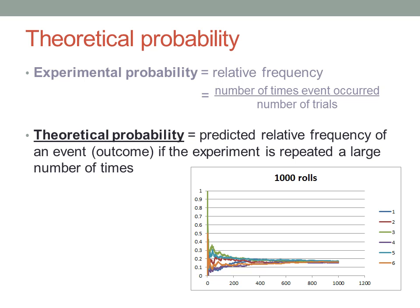The theoretical probability of an event is simply a prediction, in advance, of the expected relative frequency of that particular event, if the experiment is repeated a large number of times.